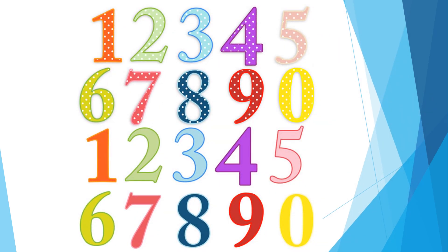One, two, three, four, five. Six, seven, eight. Nine, and zero. So, if we put one and zero together, we got ten. Okay, let's count with me again one more time.